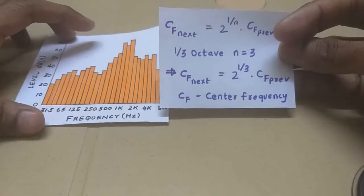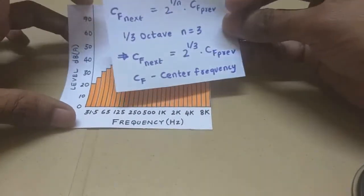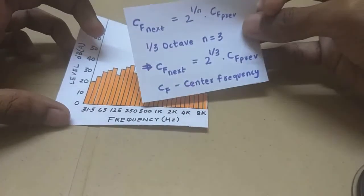So you just plug in the equation and you will get the center frequencies. I've not mentioned all the center frequencies but just mentioned the ones that are similar to the octave 1 by 1 bands.